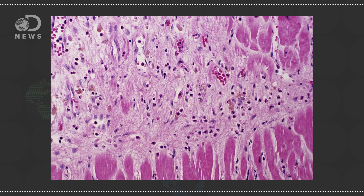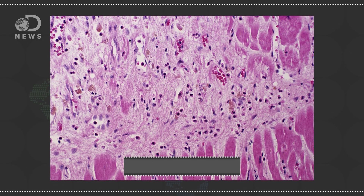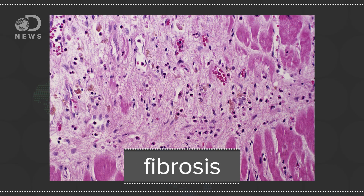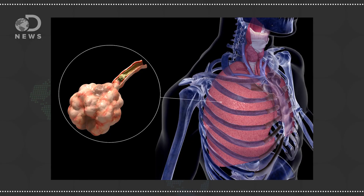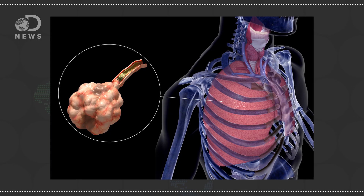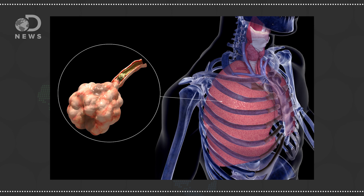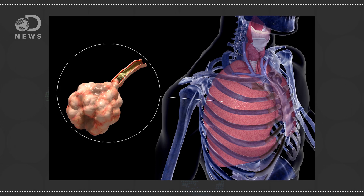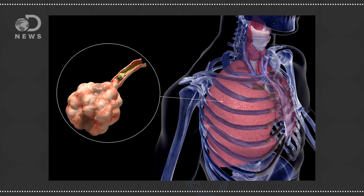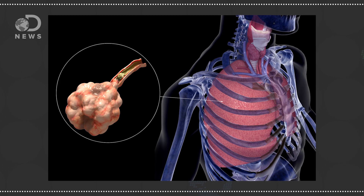If scar tissue in your organ forms, it's called fibrosis — even if it's not caused by a wound, but by an autoimmune disorder or illness. Such a buildup can cause chronic health problems like cystic fibrosis, which is damage to the lungs, and sometimes other organs like kidneys and liver. So besides being slightly unsightly, scars can really mess things up.